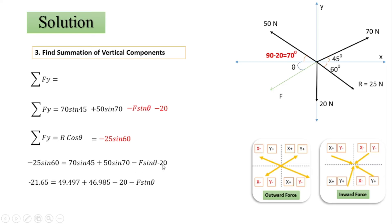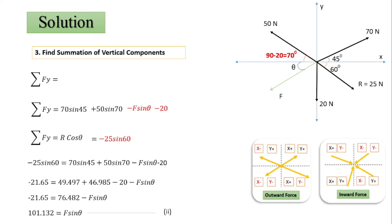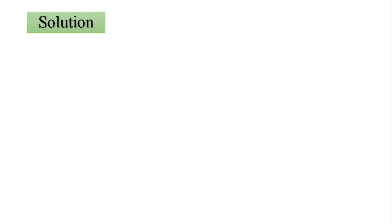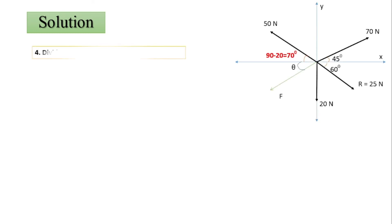Evaluating each term: minus 21.65 equals 76.482 minus F·sinθ. Rearranging gives F·sinθ equals 101.132. This is Equation 2.